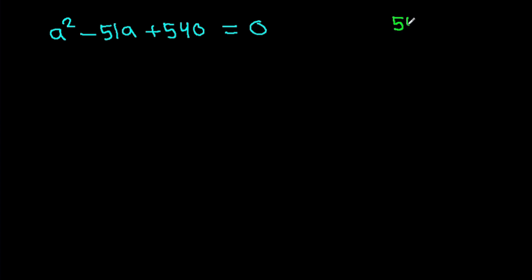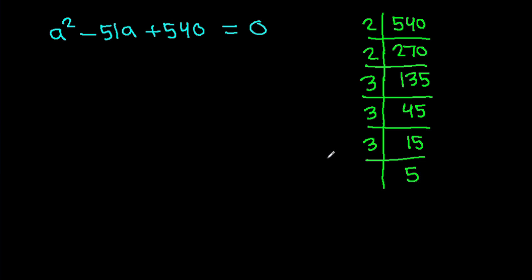And 540 is 2 times 270, 2 times 135, 3 times 45, 3 times 15, 3 times 5. So 540 is 2 times 2 times 3 times 3 times 3 times 5. And 2 times 2 times 3 times 3 times 3 is 36 times 3 times 5 is 15. And 51 is 36 plus 15.